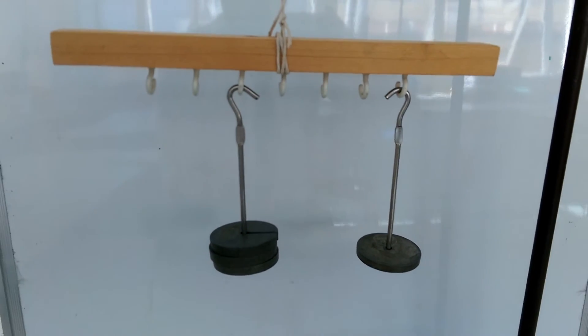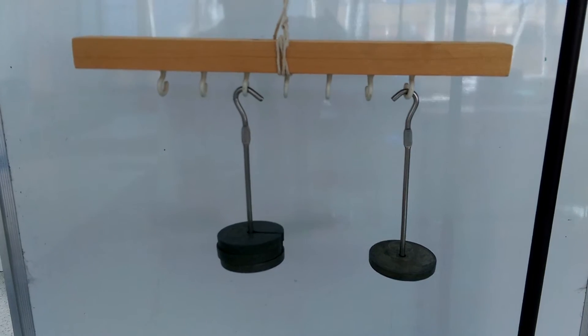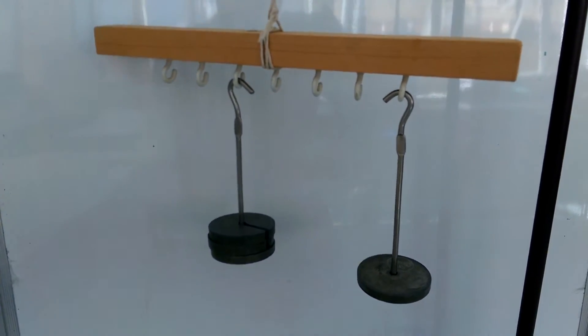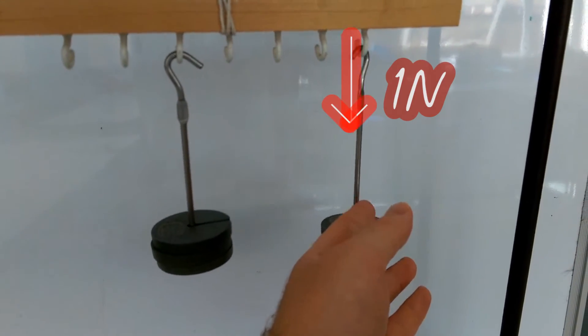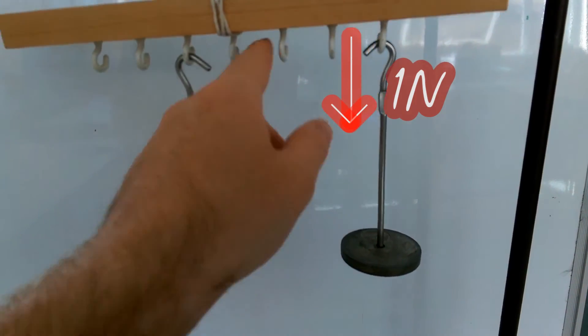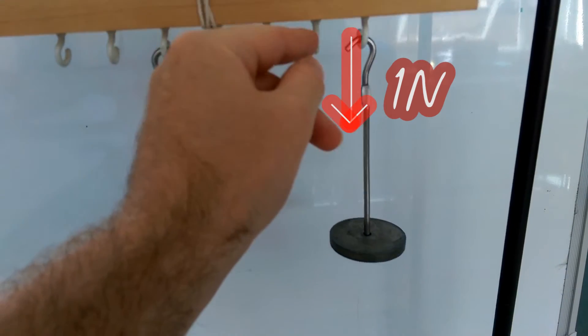So now that also is the situation where the moments are balanced. A moment is a force, that's the weight in this case, times a distance. And the distance, I'm just arbitrarily using the rungs as distance, is one, two, three.